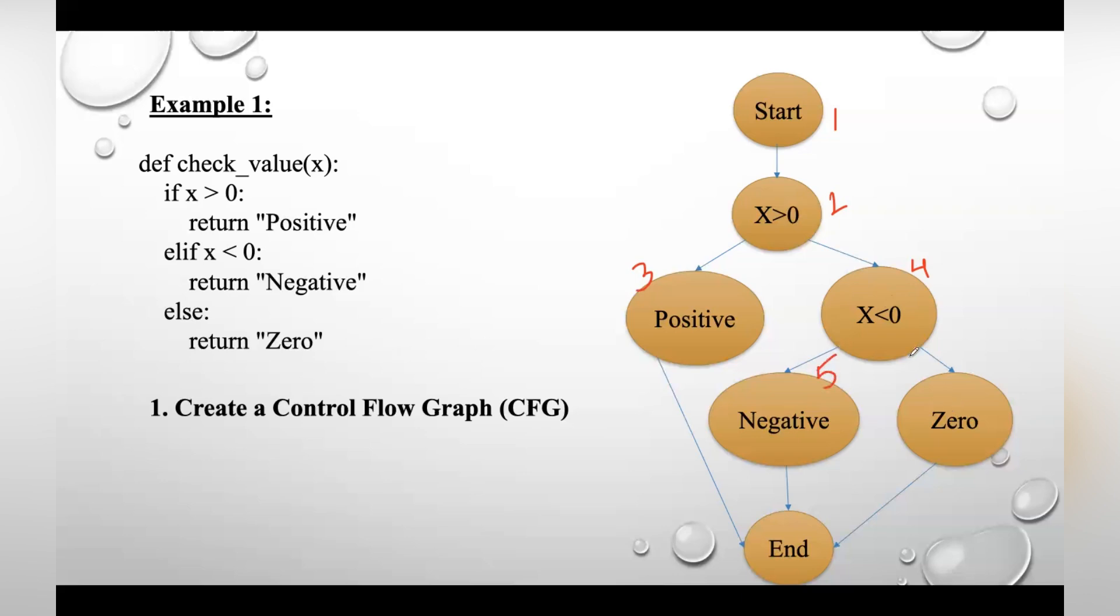If this condition is false, move to block six. In either of the cases, after executing this you can end. In all three cases, once you complete them, you can reach this end block. So this is a flow graph.